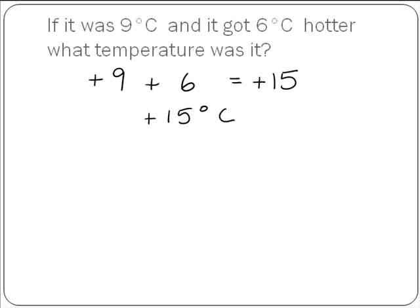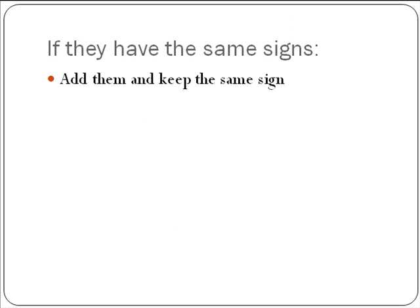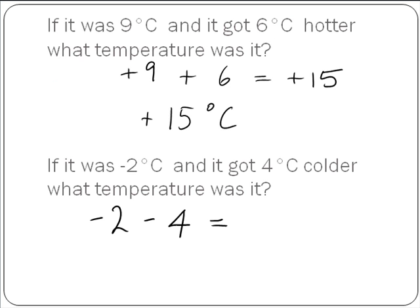Now we look at another example. If it was minus 2 degrees and I got 4 degrees colder, what temperature was it? So we have minus 2, and I got 4 degrees colder which is minus 4. We use the same rule again: if they have the same signs, add them and keep the same sign. So 4 and 2 is 6, and keep the same sign, so it's minus. So now the temperature is minus 6 degrees Celsius.